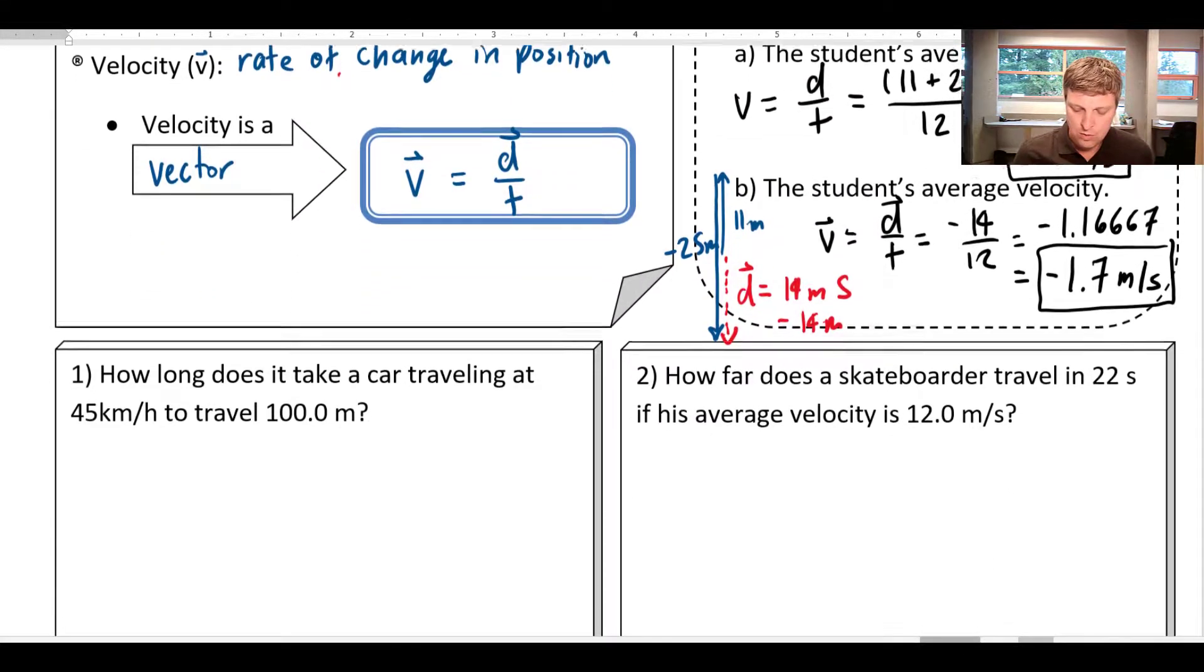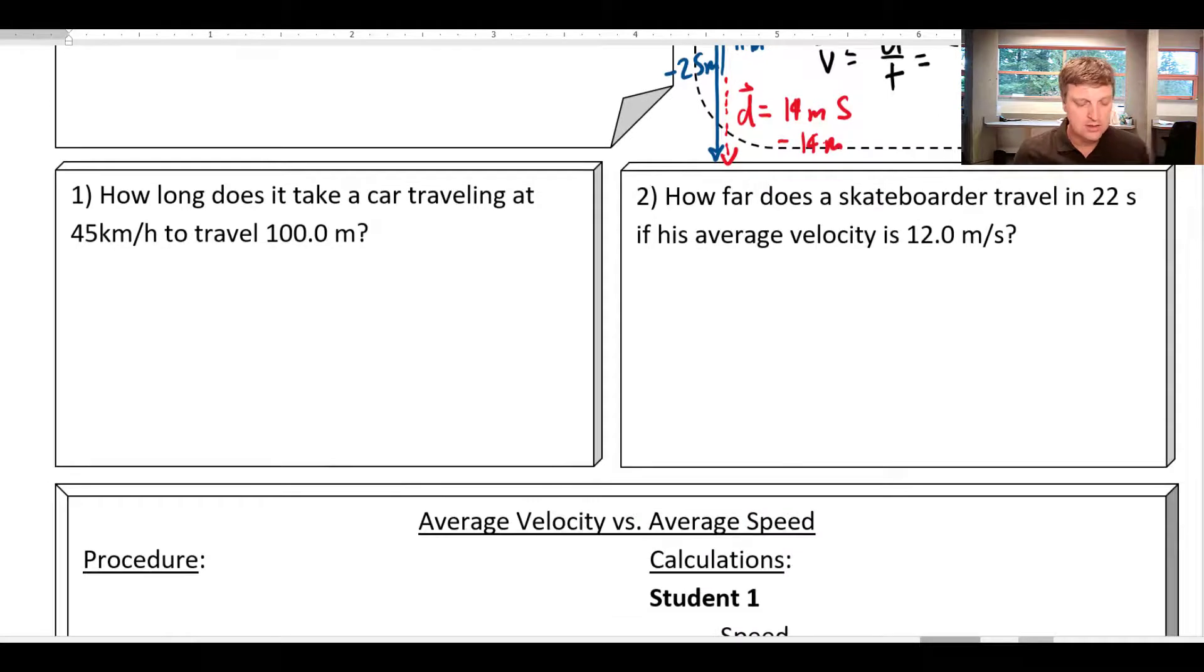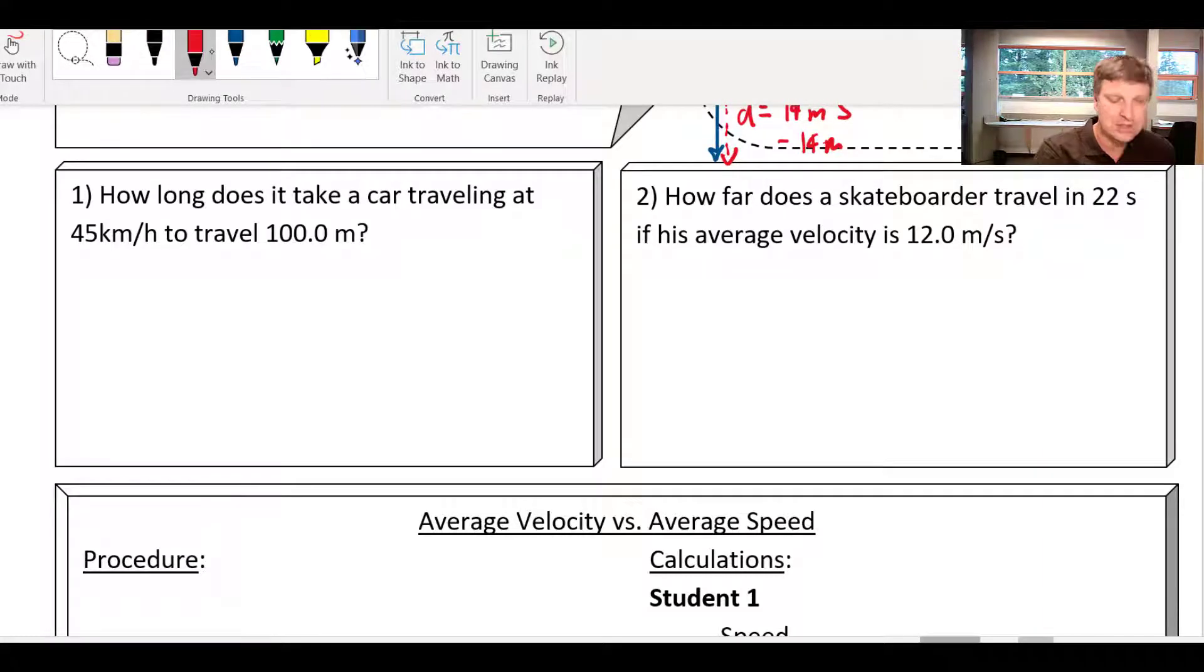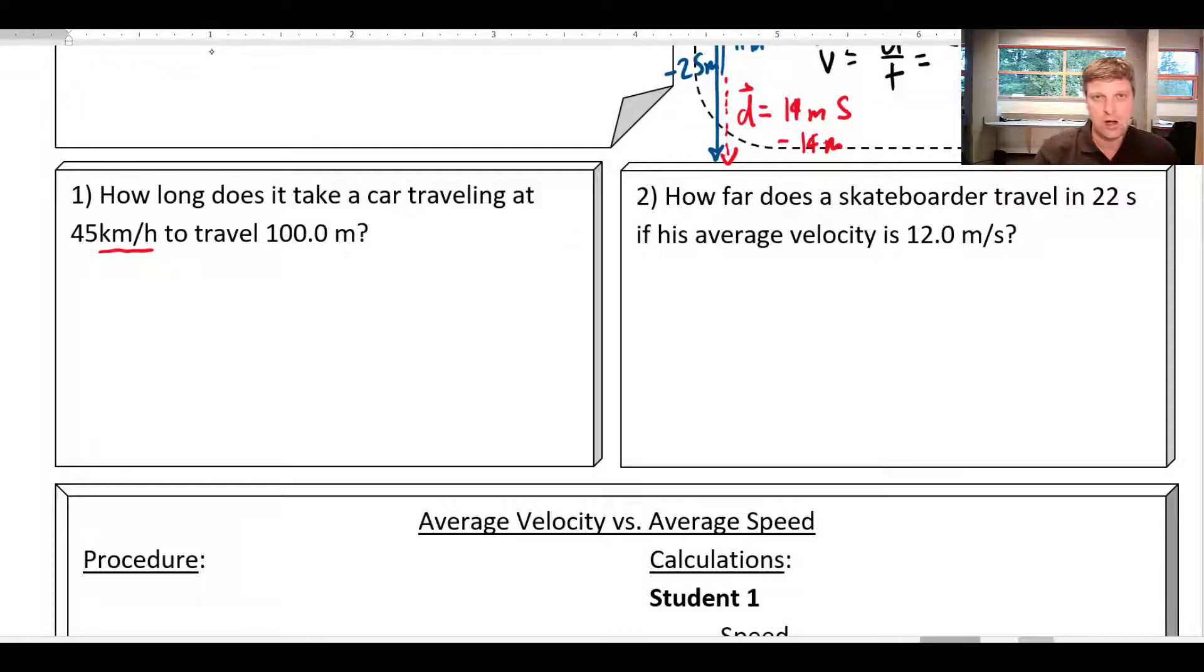Okay, so two more quick examples here. How long does it take a car traveling at 45 kilometers an hour to travel 100 meters? So the first thing, just before we get started, students like to launch in and start throwing numbers into formulas. That's great. But one thing should set off alarm bells right off the bat, and that's kilometers per hour. We can't use numbers that aren't in base units. Kilometers an hour, while we talk about that in everyday life, doesn't work when we do our calculations.